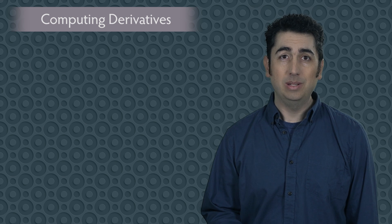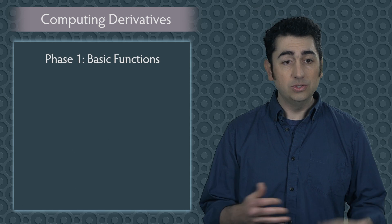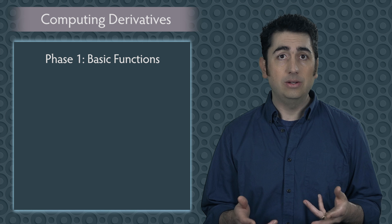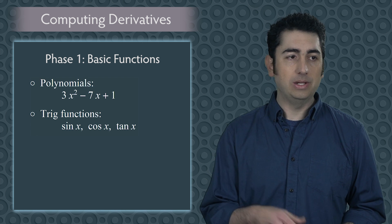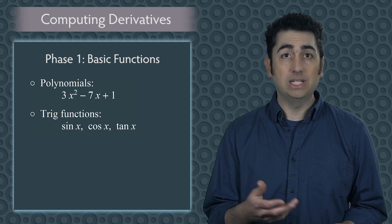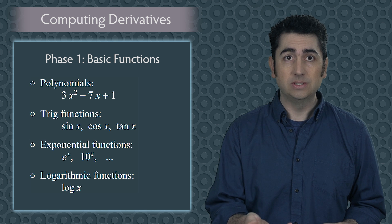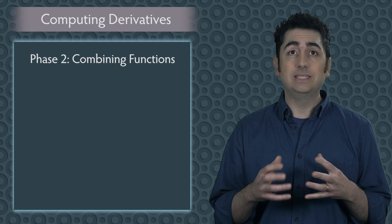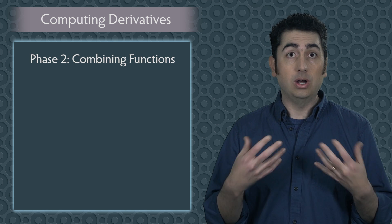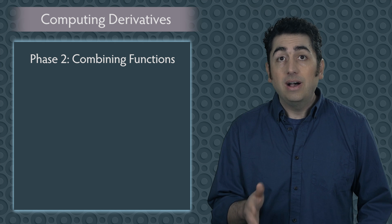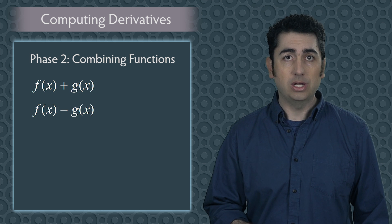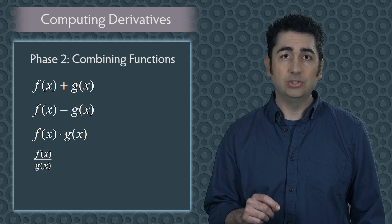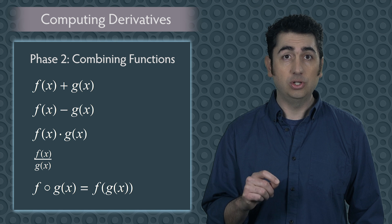In calculus, you spend a lot of time computing derivatives. When you first start out, you learn how to compute the derivatives of basic functions like polynomials, trigonometric functions, exponential, and logarithmic functions. Then you start to combine these together to make more complicated functions. The five main function operations are addition, subtraction, multiplication, division, and function composition.